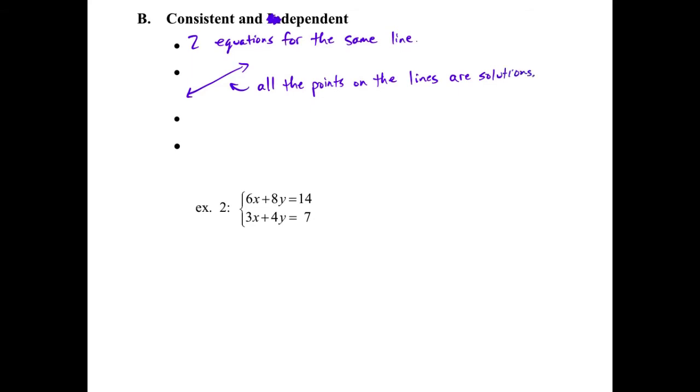Because those two lines overlap with each other at every single point on the two lines. So then we have infinitely many solutions. Infinitely many solutions.